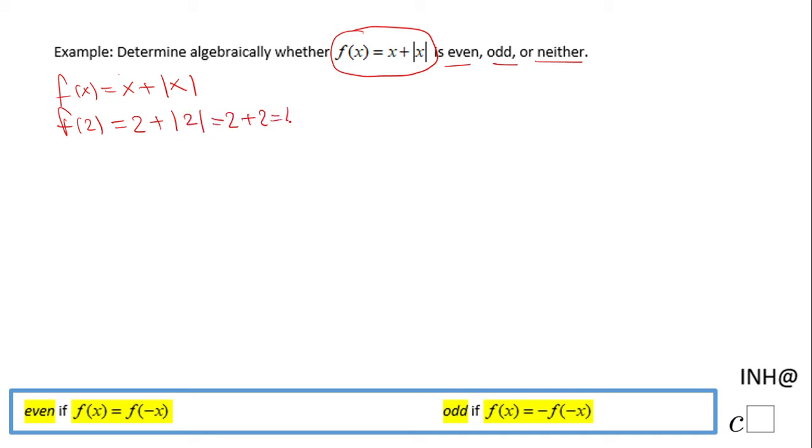Similarly, I'm going to evaluate the function at -2. f(-2) = -2 + |-2| = -2 + 2 = 0.